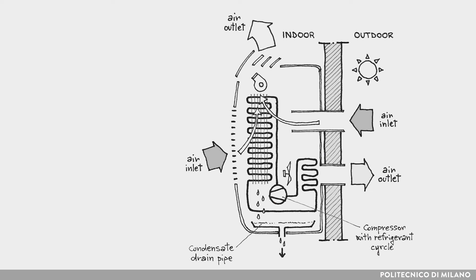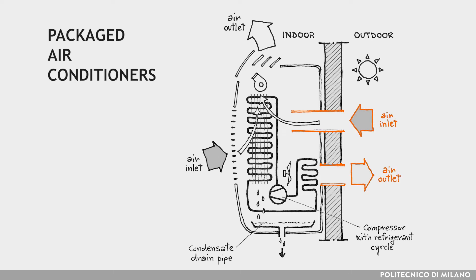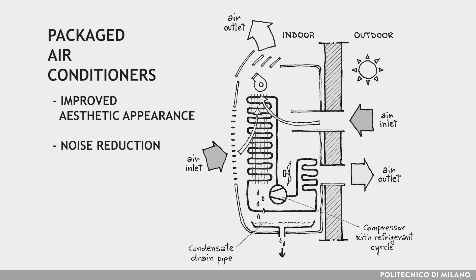A simple and practical solution to provide heating, cooling, and air handling in a room is to use packaged air conditioners. They differ from traditional window air conditioners and split units, since they have no outdoor unit or condenser. Instead, the exterior wall must be drilled with small holes or grills which allow air to flow in or out. This option offers more energy savings compared to window air conditioners, which require proper sealing to prevent heat losses. These systems can be used for heating, cooling, ventilation, and dehumidification with no external units — just a condensate drain pipe must be added. Other benefits include improved aesthetic appearance and noise reduction.